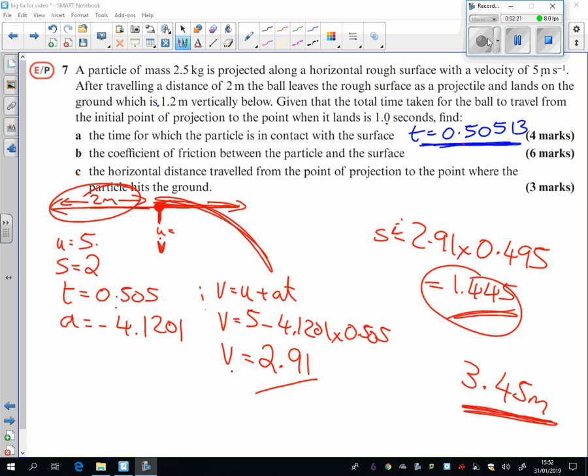Now, just going back to these calculations here, maybe V equals UT was the wrong one to use because I used such rounded figures here. You could have used any of them because you had so much information there. So maybe S equals U plus V over 2 times T might have been another one to use, then we were only using one rounded figure and that might have been easier. But either way, you get to the answer.